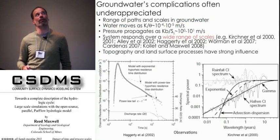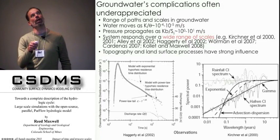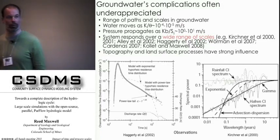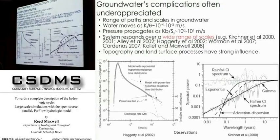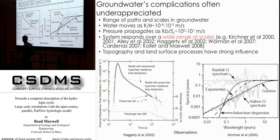On top of that, groundwater is often underappreciated in the whole scheme of things. We have a range of paths and scales in groundwater — water may move relatively slowly in a physical sense, but pressure propagates several orders of magnitude faster. This is pretty well known and contributes to a wide range of scales. There's a lot of classical work from Jim Kirchner, Bill Alley, and Roy Haggerty. Topography and land surface processes have a really strong influence.